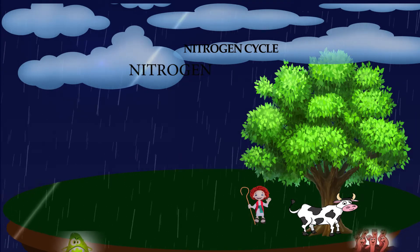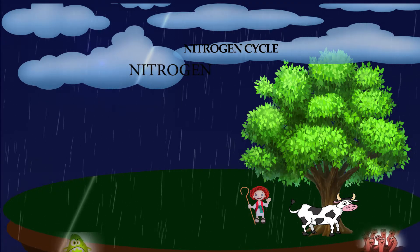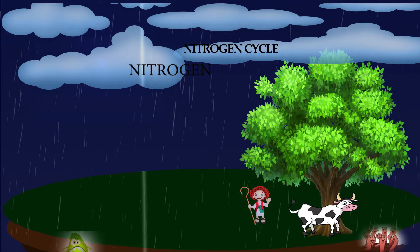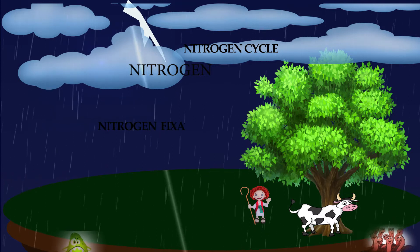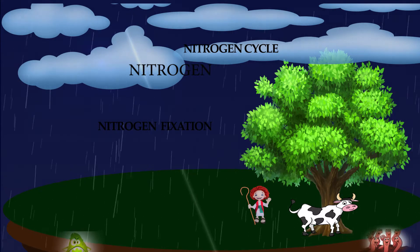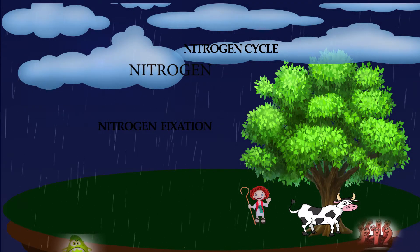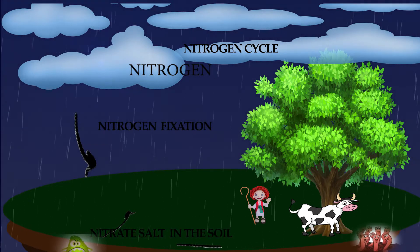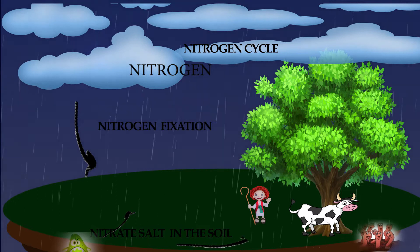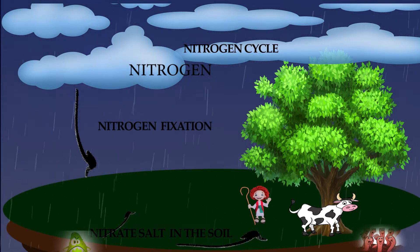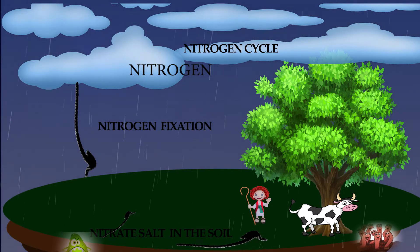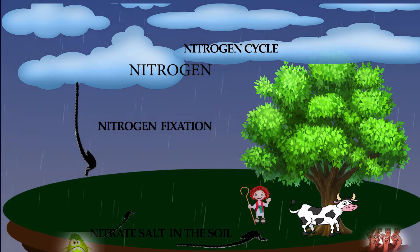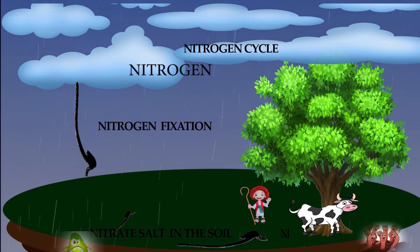Nitrogen Cycle. Most of the atmosphere is nitrogen. Plants don't take nitrogen directly from the atmosphere. When lightning strikes, the nitrogen in the air reacts and forms nitrates, which are washed into the soil. Tiny organisms that live in the soil take nitrogen from the atmosphere and pass it through the soil where plants can use it. This is called nitrogen fixation.